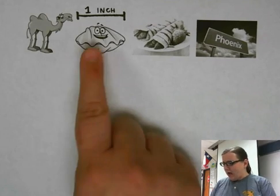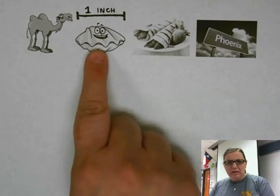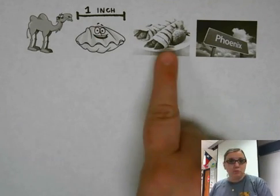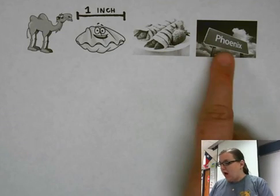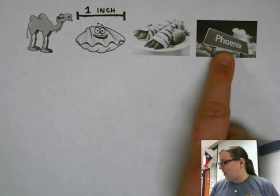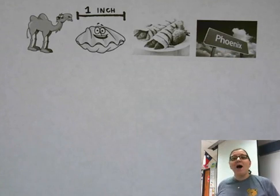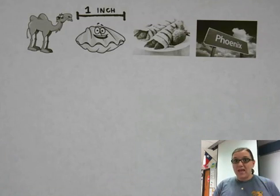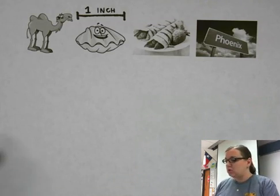I've got a camel, a clam that has an inch measurement above it, some crepes — makes me hungry — and then a phoenix sign. And you're like, what the heck do these have to do with polyatomic ions? Well, I'm going to write down a saying that you can use for the eight polyatomic ions — the ones that have '-ate' at the end.